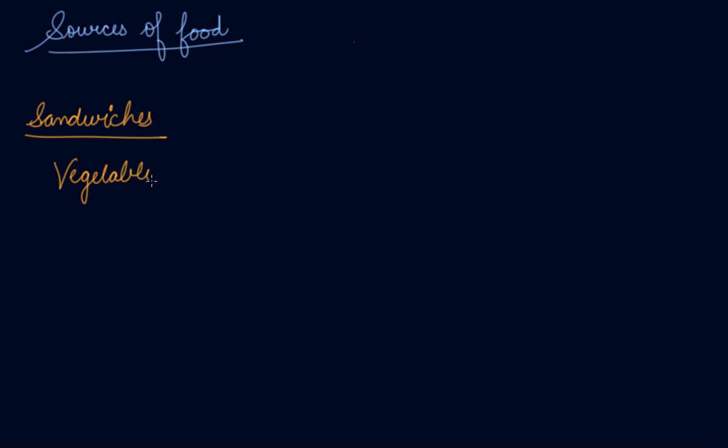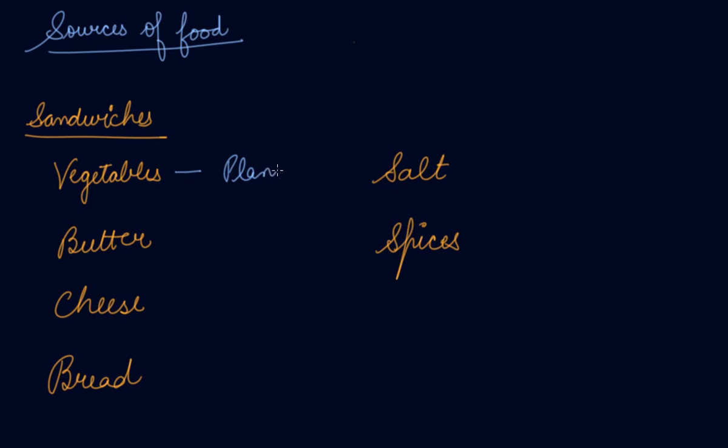we require butter, we require cheese, we require bread, we require salt, and we require spices. Now, if I say vegetables, where do we get the vegetables from? Plants and animals? Sorry, plants.